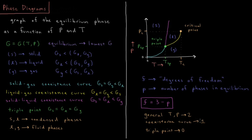Along the coexistence curve, two phases are in equilibrium, so F = 3 − 2 = 1. We can change the temperature, but we're not free to choose the pressure independently, because for a given temperature there's a required pressure for that coexistence curve. At the triple point, three phases are in equilibrium, so F = 3 − 3 = 0. There is only a single point in the phase diagram where three phases can be in equilibrium, because varying either temperature or pressure moves us away from that triple point.